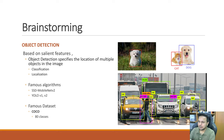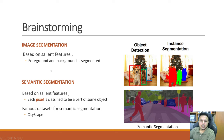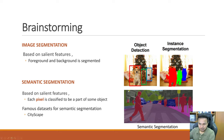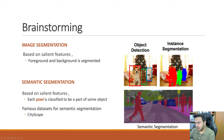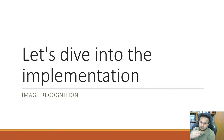In object detection, image classification is the base, and then we add localization — that is how we perform object detection. You might have also heard about image segmentation, which is again based on these algorithms. In image segmentation, we classify each pixel. This is semantic segmentation. We also have instance segmentation. These are typical examples of image segmentation.